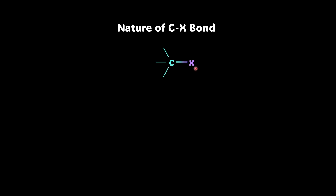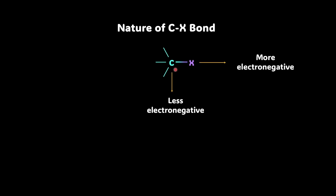We know that halogen is more electronegative than carbon. So, halogen — be it fluorine, chlorine, bromine, or iodine — is more electronegative as compared to carbon, which is less electronegative. Electronegativity is the ability of an element in a compound to attract the shared pair of electrons towards itself. So, halogen being more electronegative pulls the electron density towards itself, resulting in a partial negative charge on halogen and a partial positive charge on carbon. We write delta minus on halogen and delta plus on carbon.